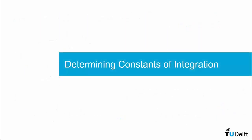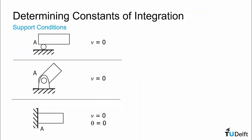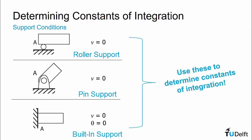But how do we determine what these constants should be? For that, we'll have to look at the boundary conditions of the problem. The first set of boundary conditions we can look at is the support conditions. Roller supports, pin supports, and built-in supports each have various constraints on the displacement and slope that they permit. Knowing the location of a support, its z position along the beam, we can equate our displacement equations to the support conditions at this location and solve for the constants of integration.